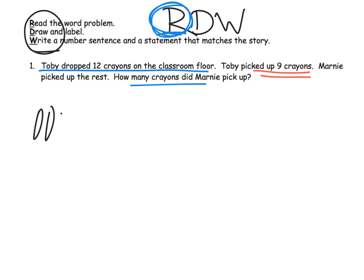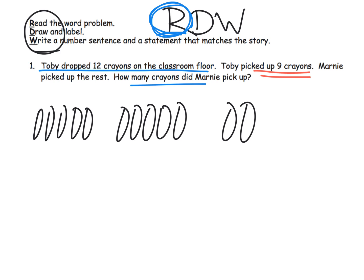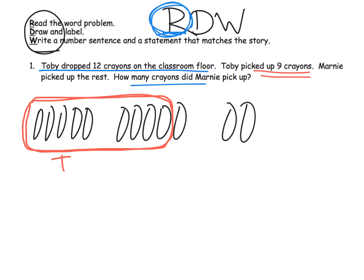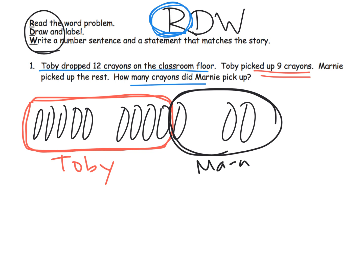I'm going to draw 1, 2, 3, 4, 5, 6, 7, 8, 9, 10, 11, 12. Notice I'm doing them in our five-group format — I didn't put it in a ten-frame, although I could. So there's Toby — he dropped 12 of them. Now he's going to pick up nine of them, so let's put a circle around nine. That's five plus four, and these are the ones that Toby picked up. Then it says Marnie picked up the rest — so these are the ones that Marnie picked up. We can see that our answer is three crayons. So Marnie picked up three crayons.